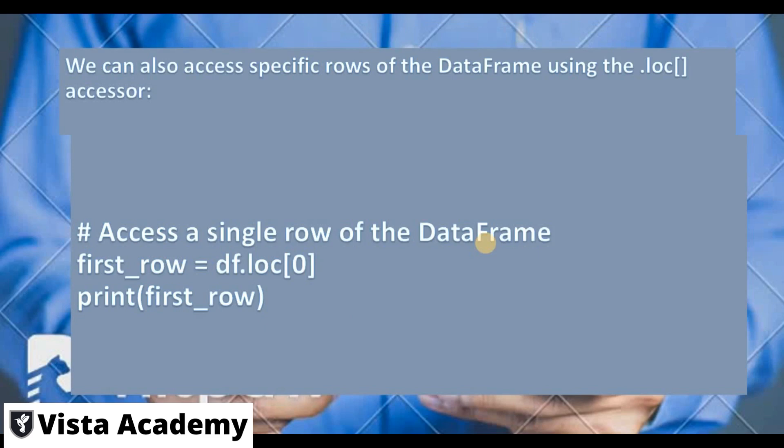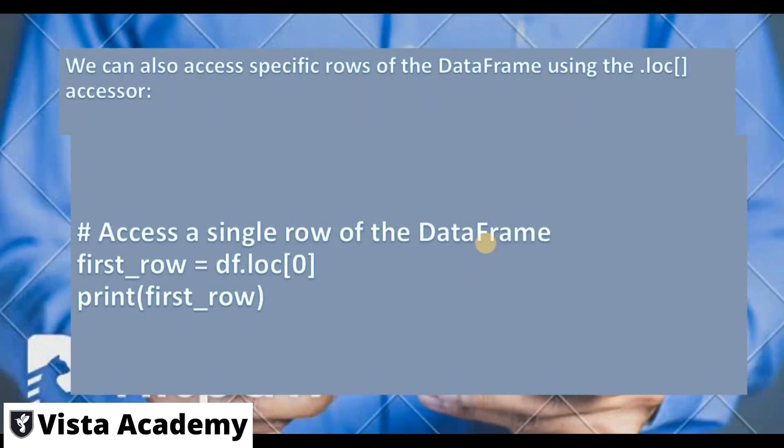We can also access a specific row of the DataFrame using the dot loc command. Here, first_row = df.loc[0] will retrieve the row at index zero and then we print first_row to display it. Now let's go to Jupyter Notebook and create our DataFrame.